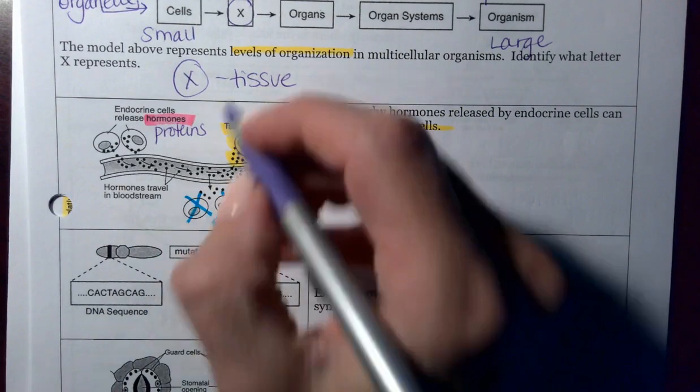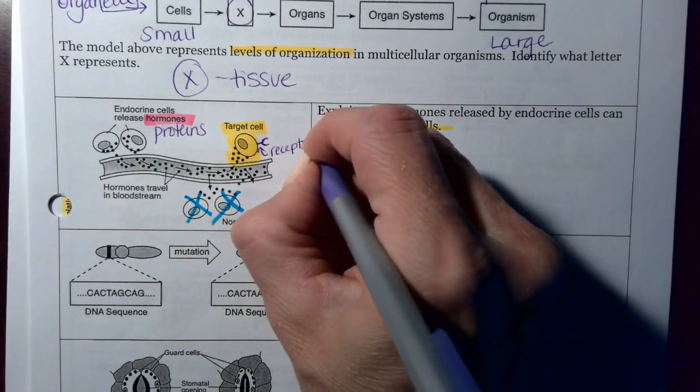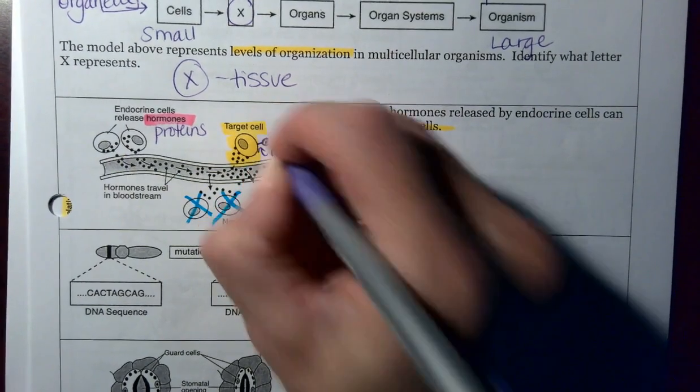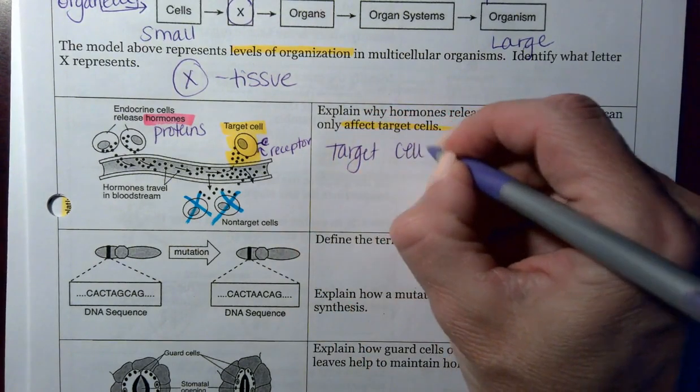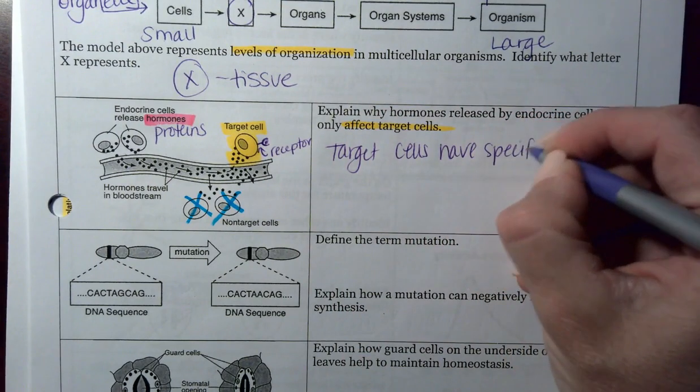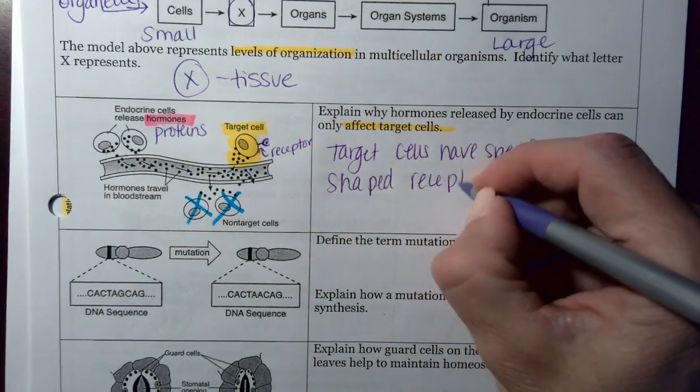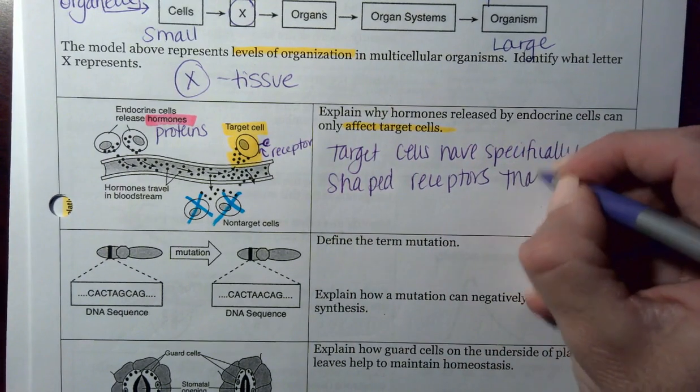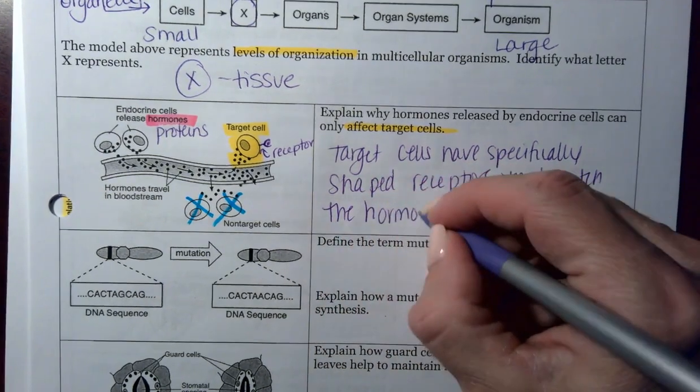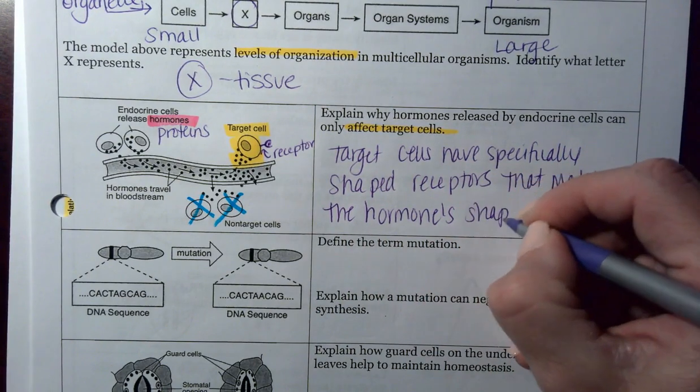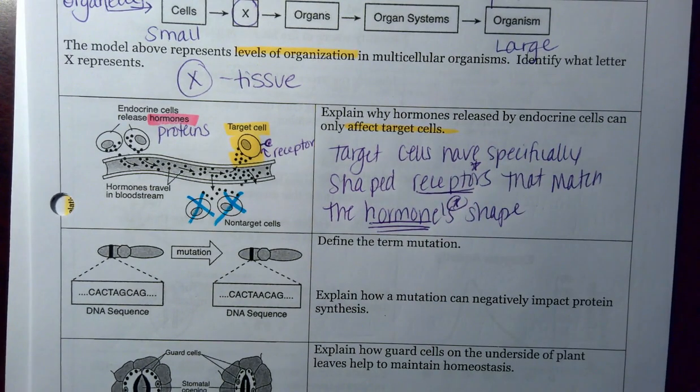The reason for that is going to be because target cells have receptors on them that have a complementary shape to the hormone that was released, so they fit together like a lock and key. So you have target cells have specifically shaped receptors. Receptors are just another type of protein that match the hormone shape. And by match, I mean they're complementary, they fit together like a lock and key. Also, hormones, again, those are proteins. Receptors are proteins. Anything that's a protein has that specific shape.